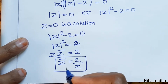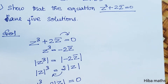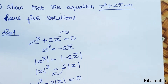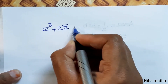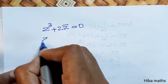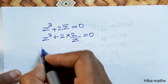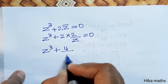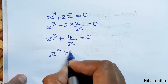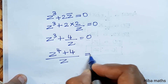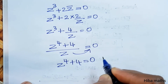Now we substitute Z̄ = 2/Z back into the original equation Z³ + 2Z̄ = 0. This gives Z³ + 2·(2/Z) = 0, which simplifies to Z³ + 4/Z = 0. Multiplying through by Z, we get Z⁴ + 4 = 0.